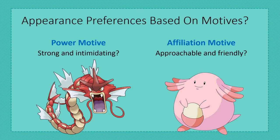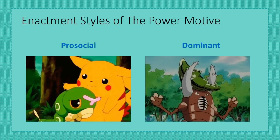Due to perceptions, memories, and experiences being influenced by motives, we assume that power-motivated players should like strong and intimidating Pokémon because they wish to establish superiority. On the other hand, affiliation-motivated players might prefer Pokémon that look approachable and friendly because they want to make friends and be liked by others. Because there are different ways to achieve superiority or high status, we distinguish two enactment styles of the power motive: prosocial and dominant power — in other words, whether players want to empower or overpower other players.